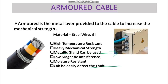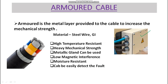Another advantage is that it supports metallic gland termination. As you can see here, a metallic gland is used at panel termination points. This secures the cable so it does not move in or out. This protects against loss of earth connection and other incidents like short circuits.